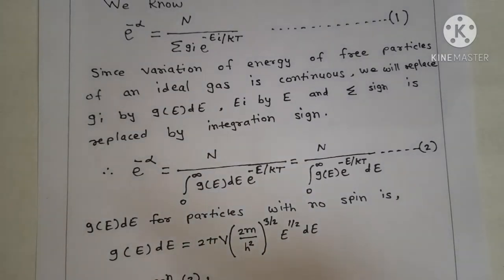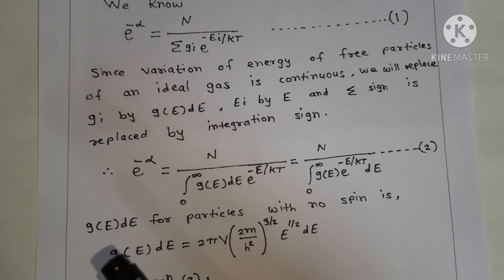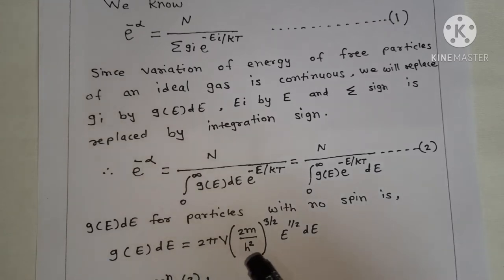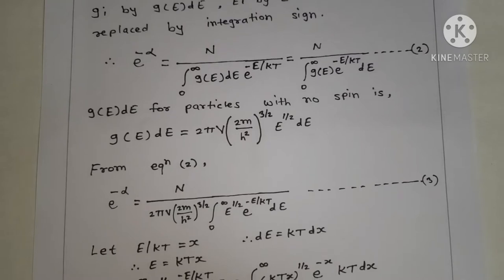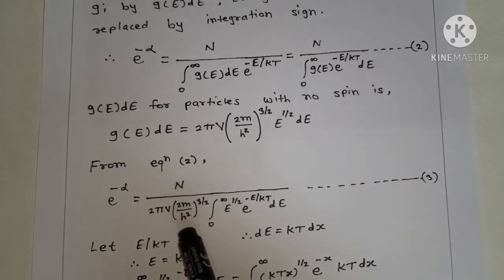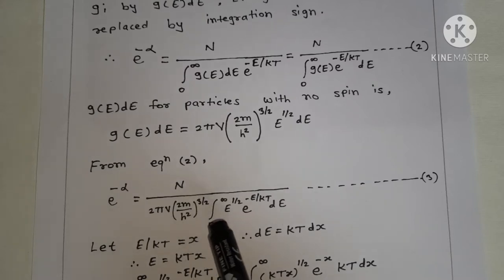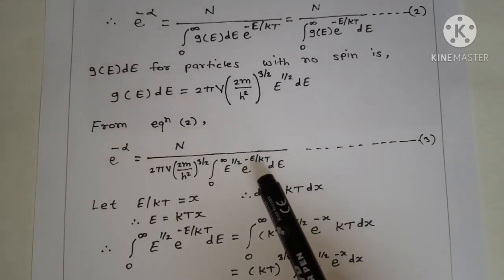Now, see here we have taken integration from 0 to infinity because there is a reason. The energy of particles of an ideal gas is completely kinetic and they can have any kinetic energy, so we have taken the limit from 0 to infinity. From equation second, e raised to minus alpha is equal to n upon 2π V into bracket 2m upon h squared raised to 3/2, times the integral from 0 to infinity of e raised to 1/2 into e raised to minus e upon kT de. Equation 3.